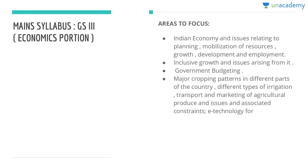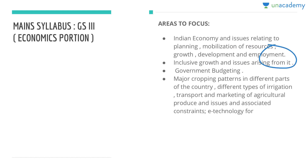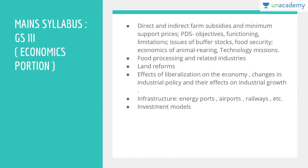The GS3 economics portion deals with the Indian economy and issues related to planning, mobilization of resources, growth, development, employment, and inclusive growth. Government budgeting is very important. It also covers major cropping patterns in different parts of the country, transport and marketing of agricultural produce, APMC Act issues, constraints of e-technology in agriculture.